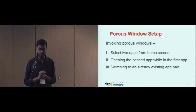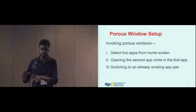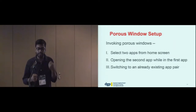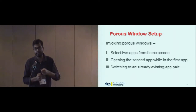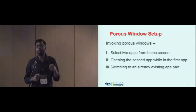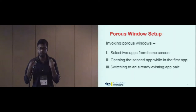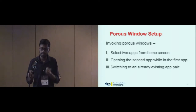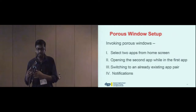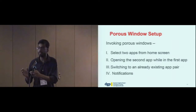There are three main scenarios: one, when the user wants to open two overlaid apps from the get-go starting at the home screen; two, when a single app is already open and the user wants to open a second app overlaid on top; and three, when the user wants to switch to an already-open pairing. There is also a fourth scenario — notifications — where the user gets interrupted and might want to open the interrupting app as an overlay.